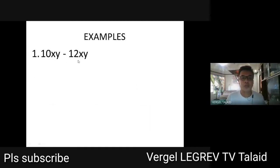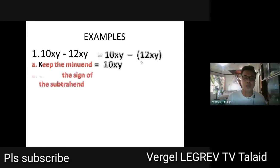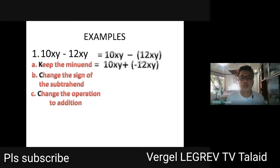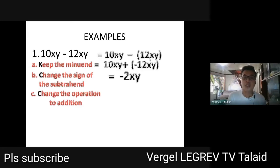For example, if you have 10XY minus 12XY — this is subtraction because there is a minus sign. This can be written as 10XY minus positive 12XY. Following KCC: keep the minuend, so 10XY; change the sign of the subtrahend, so 12XY becomes negative 12XY; change the operation to addition. This is now addition of unlike signs — 10 and negative 12 — so you subtract and copy the sign of the largest absolute value: negative 2. Copy the common literal coefficient XY. Note that 10XY and negative 12XY are similar terms because they have the same literal coefficient XY, so they can be combined.